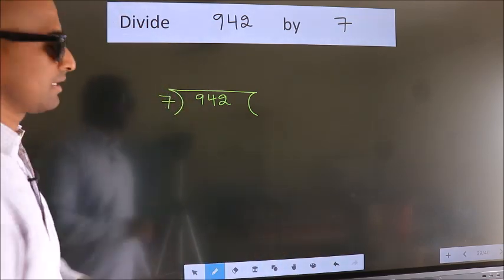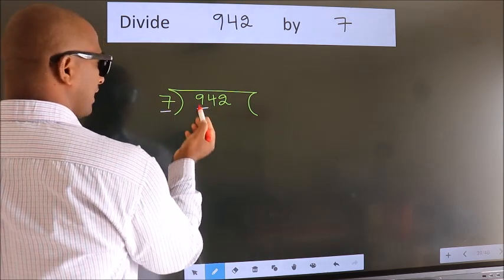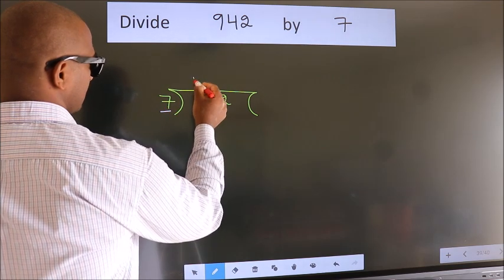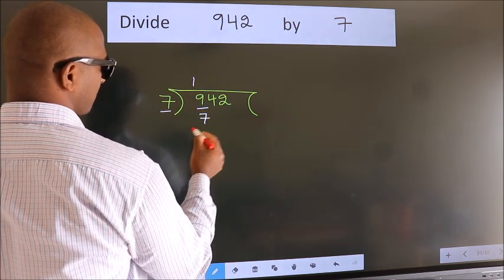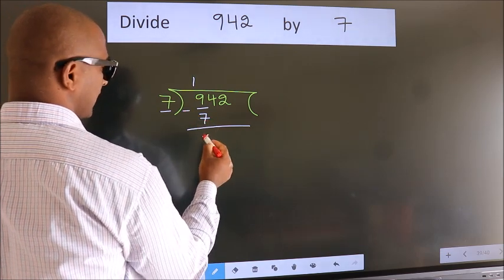Next. Here we have 9, here 7. A number close to 9 in 7 table is 7 once 7. Now, we should subtract. We get 2.